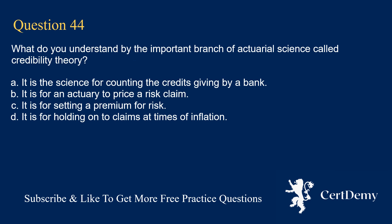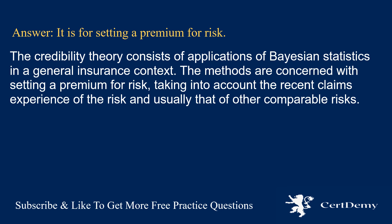Question 44. What do you understand by the important branch of actuarial science called credibility theory? Options: it is the science for counting credits given by a bank; it is for an actuary to price a risk claim; it is for setting a premium for risk; it is for holding on to claims at times of inflation. The answer is: it is for setting a premium for risk. Credibility theory consists of applications of Bayesian statistics in a general insurance context, concerned with setting a premium for risk taking into account recent claims experience of the risk and that of other comparable risks.